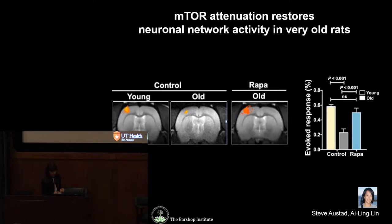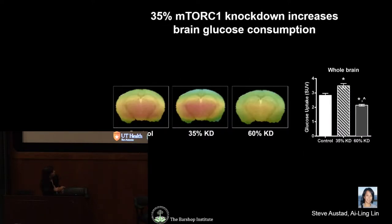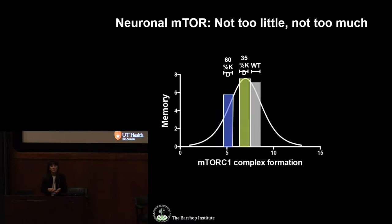This was confirmed by glucose PET imaging data also generated by Ling. Consistent with the cognitive phenotypes we observed, glucose metabolism in the brains of 35% knockdown animals was enhanced relative to controls, while 60% knockdown animals were impaired with decreased glucose metabolism.